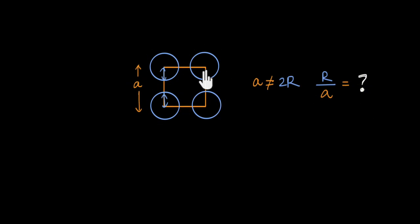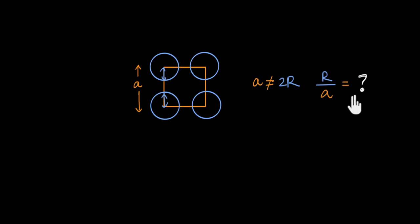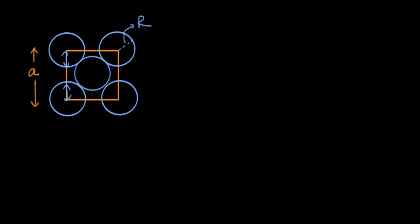If the circles did not touch each other, the side a would not equal 2r and we couldn't determine r/a from the configuration alone. However, in a metal crystal atoms cannot just hang in space — they must be bonded to at least one other atom. Now let us look at a different configuration: a square-centered unit cell, which is also a valid metal crystal since each atom is bonded to at least one other.